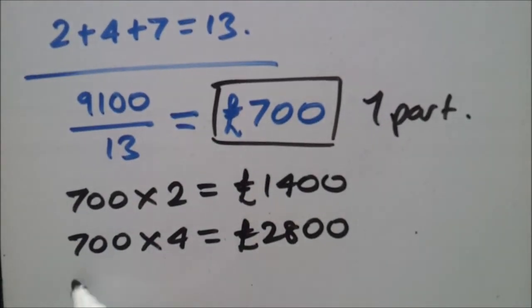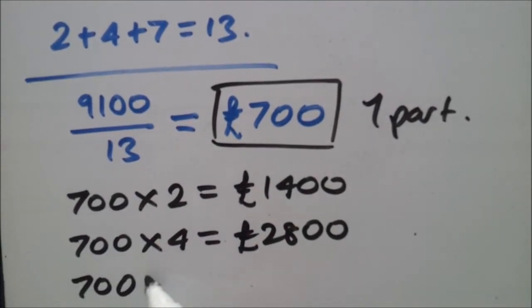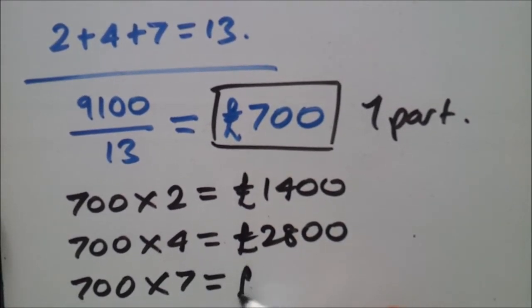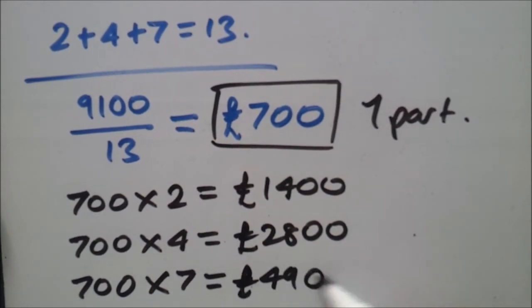Very straight forward isn't it? And of course, let's just do the last one. So, 700 times seven parts should give you 4900.